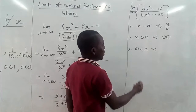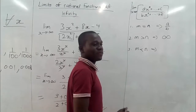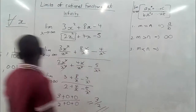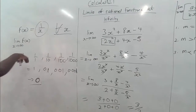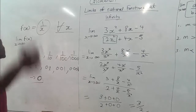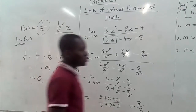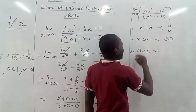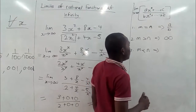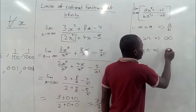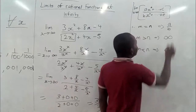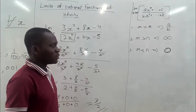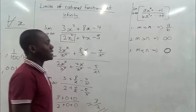Third, when m < n — the numerator degree is less than the denominator degree — dividing a lower power by a higher power leaves a reciprocal power, like 1/x. As we saw with the parent function, 1 over any form of x taken to infinity tends to 0. So when the power of the leading variable in the numerator is less than that in the denominator, the limit tends to 0 at infinity.